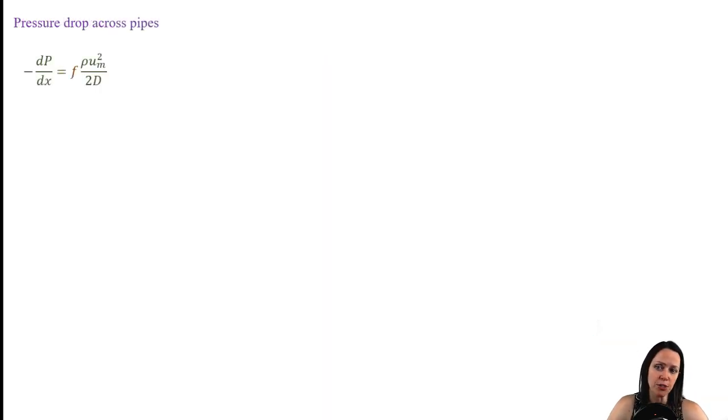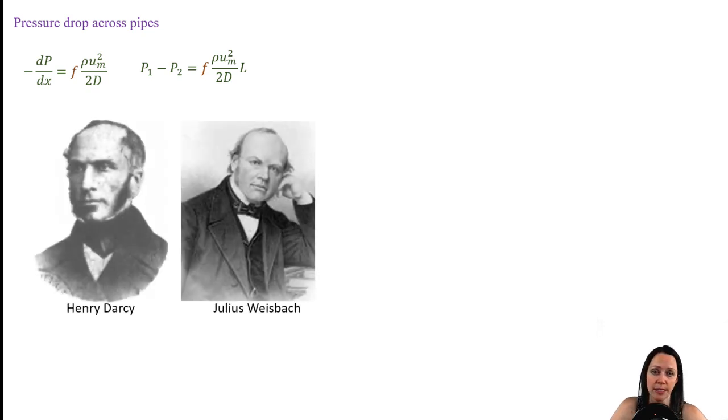In practice, it's convenient to express the pressure loss for all types of fully developed internal flow in terms of the Moody friction factor F. If the flow is fully developed, the pressure gradient dp dx is a constant, and the expression becomes even simpler. So you may also see this referred to as the Darcy friction factor. Sometimes you see it referred to as the Darcy-Weisbach friction factor over the two engineers who provided the most contribution to the development of this equation. The equation that you see here is valid for all fully developed internal flows, regardless of whether you have a circular pipe, a non-circular pipe, or duct, whether the pipe's interior surface is smooth or rough, or if the pipe is inclined or horizontal.